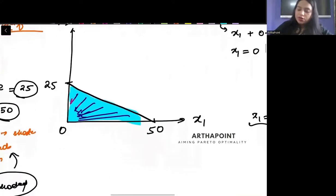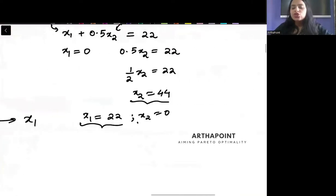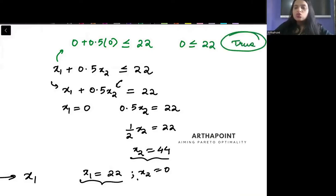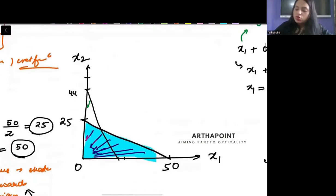So I will have 44 here, and 22 here, and I will just join this. Now, whether I should shade towards the origin or away from the origin. I will put 0 everywhere. 0 plus 0.5 into 0 less than equal to 22. 0 less than equal to 22. This is a true statement. So if this is true, you will shade towards the origin. That means you will shade this region.